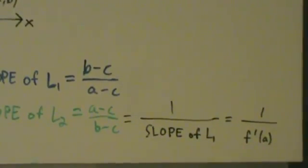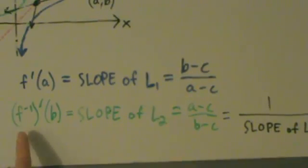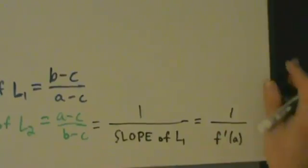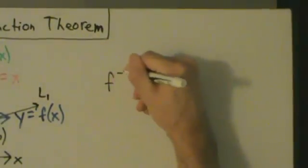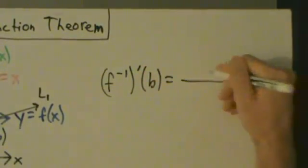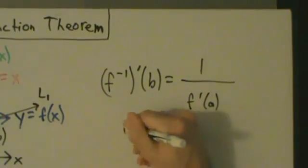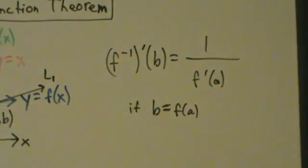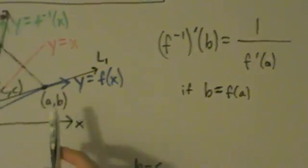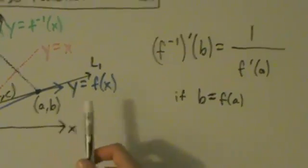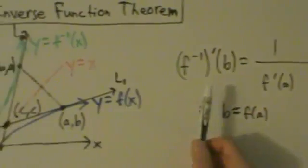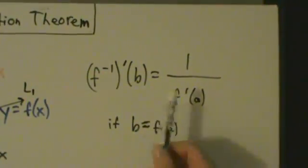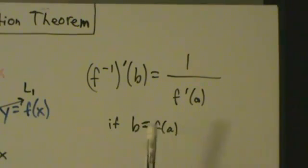This isn't really a formal proof, but it gives a geometric idea of what's going on. What we've just shown is that f inverse prime of b equals 1 over f prime of a, provided that b equals f of a. So if you have a function and its inverse, and the point (a, b) is on the graph of the function, then the derivative of the inverse at the point where x equals b is given by this formula.